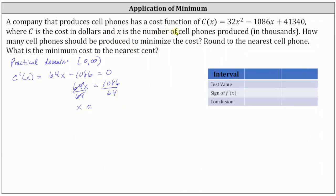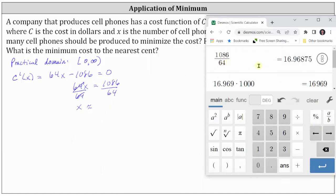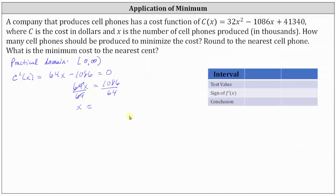Since x is the number of cell phones in thousands, we round this value to three decimal places so that when we multiply by 1,000 we have the answer to the nearest cell phone. Going to the calculator, rounding the quotient to 16.969 and multiplying by 1,000, we get x is approximately 16.969, and therefore the number of cell phones is 16.969 times 1,000, which equals 16,969 cell phones.